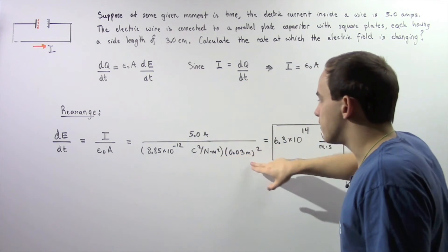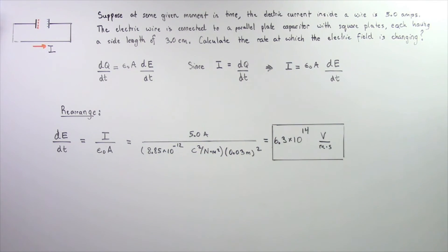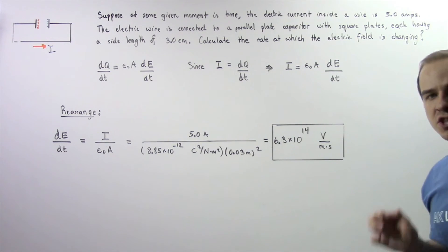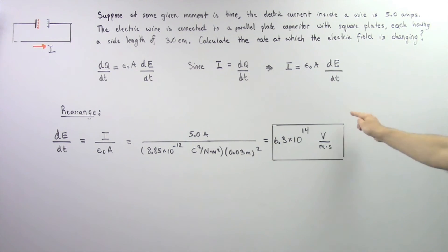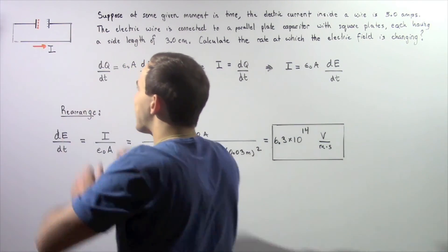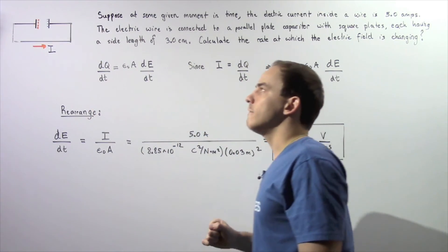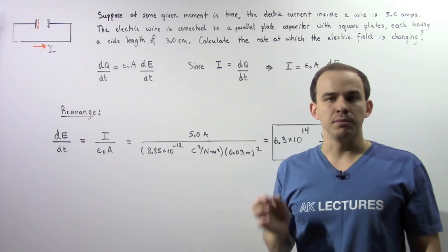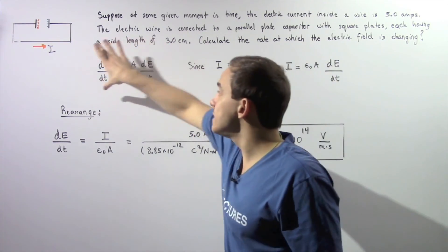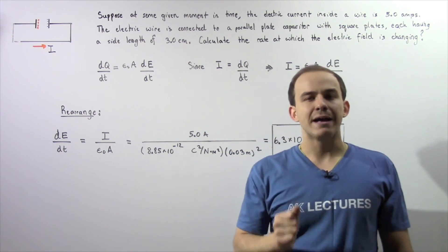So 5 amps divided by the product of the area and the permittivity of free space gives us a value of 6.3 times 10 to the 14 volts per meter per second. This is the rate at which our electric field is changing inside our capacitor as a result of the changing charge on either one of these two plates. This equation comes from the general form of Ampere's law.